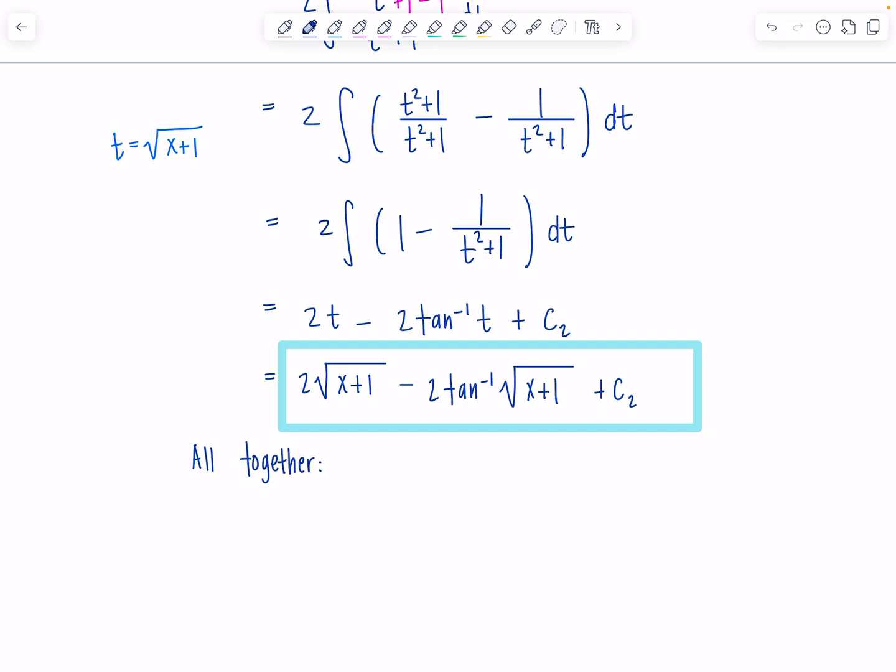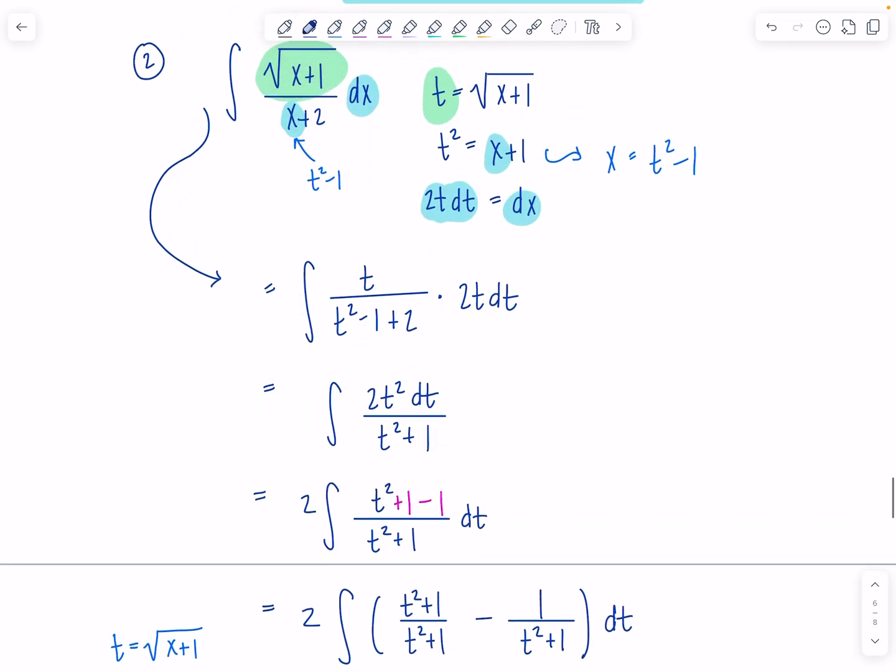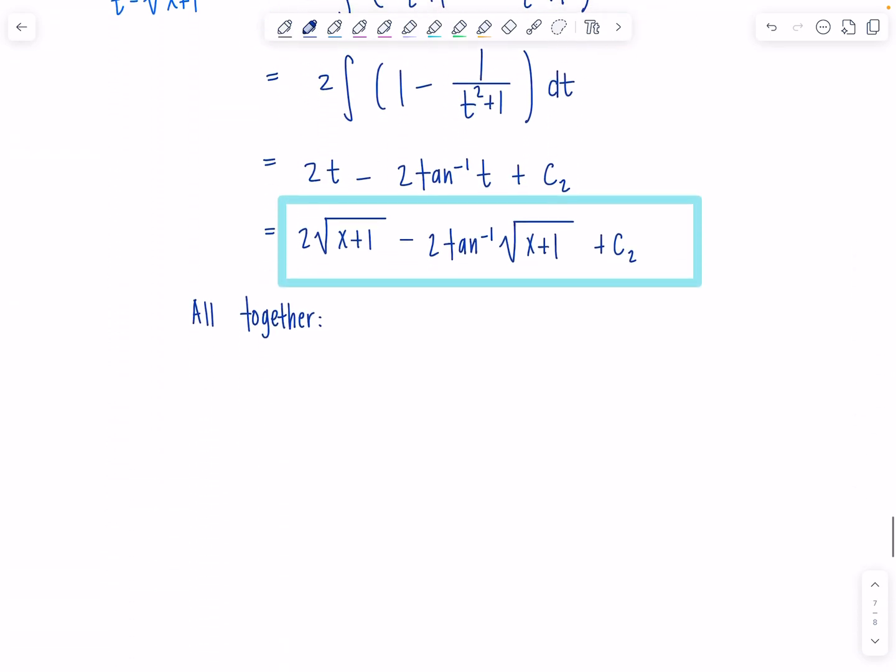From the first integral, what did we have? Where was it? x minus 2 ln absolute value x plus 1, plus 2 square root x plus 1, minus 2 tan inverse square root x plus 1, plus c, and then you've got to tell the people, c is c1 plus c2. Sorry, this 2 is too ugly. Fix it. Good. Oh, it's so nice. Now, I have a confession.